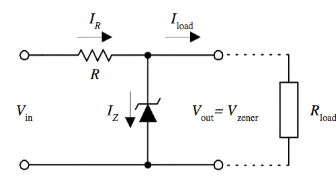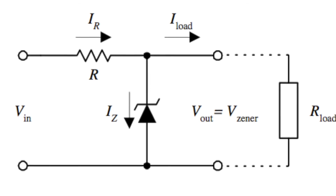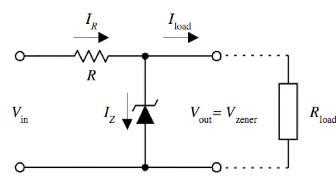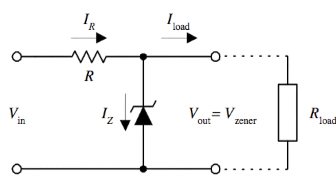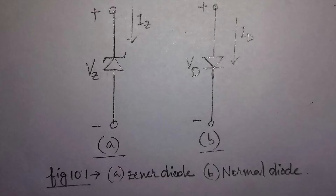A Zener diode allows the flow of current from anode to cathode, as well as in the reverse direction when the Zener voltage is reached. The device was named after Clarence Melvin Zener, who discovered the Zener effect. Both the semiconductor diode and Zener diode symbols are as shown in this figure.